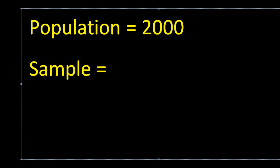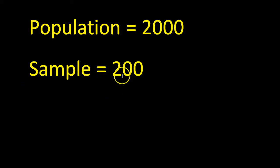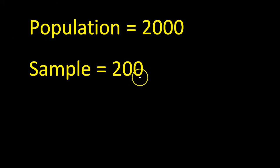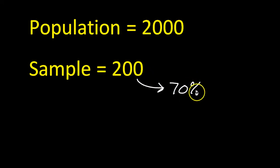Let's say it's 200 students. I'm hoping that when I ask those 200 students, whatever percentage of them say they like the new bell schedule — let's say that 70% of them say they like the new bell schedule. So the sample says 70% approval.